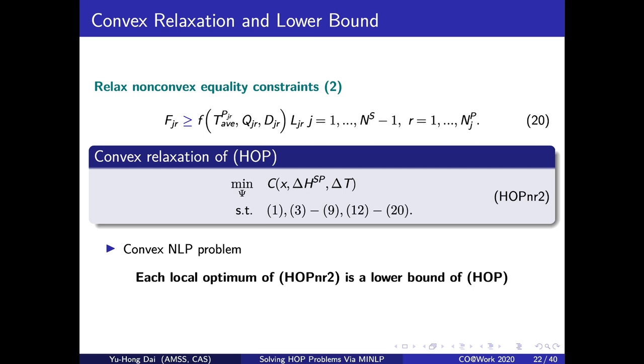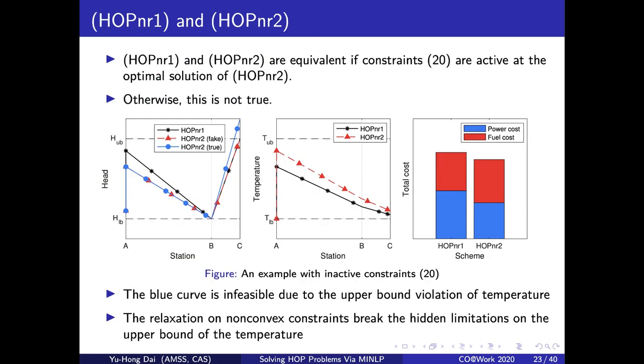It is a convex problem, so each local optimum is also global optimum. Now we obtain the lower bound of HOP. At this point, we have two relaxations of HOP. And the only difference between them is the nonlinear constraint 20. So obviously they are equivalent if these constraints are active at the optimal solution of HOPnr2. Otherwise, the equivalence property may not be true. This is shown by the example in this figure.